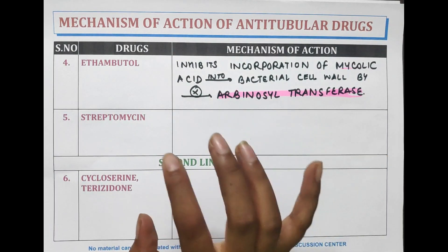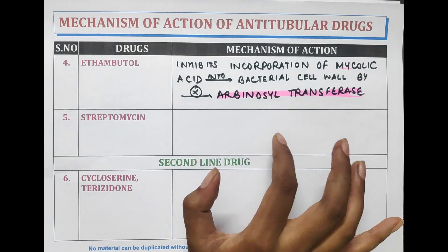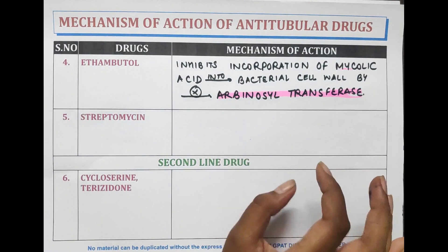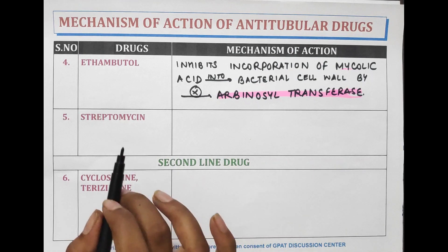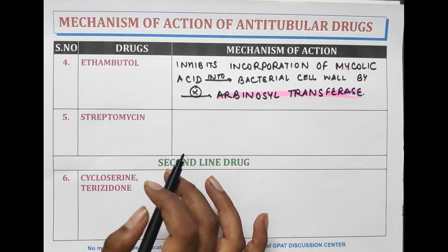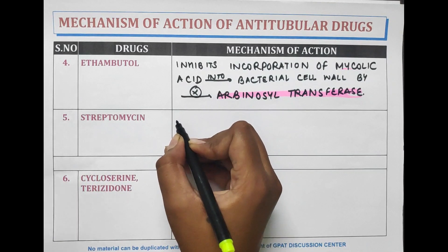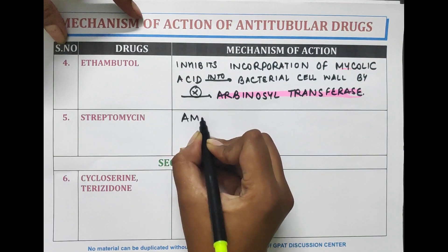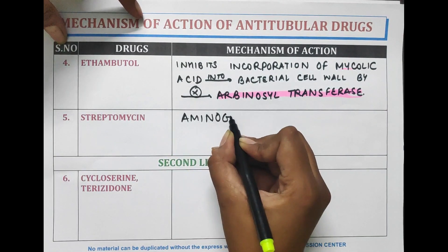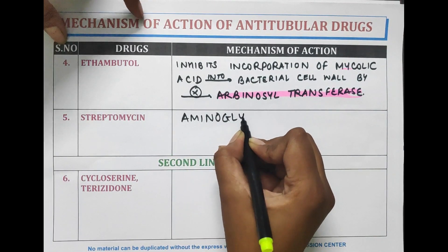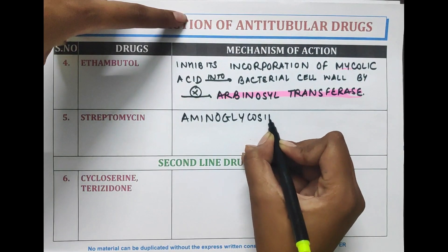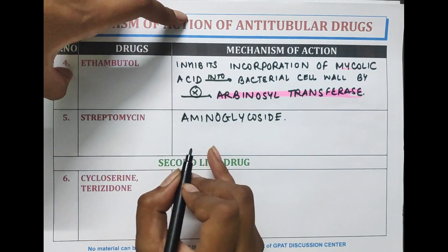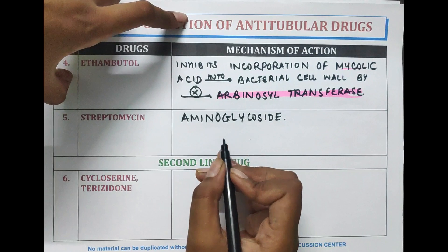The next drug is streptomycin. This is an aminoglycoside, and it acts by inhibiting bacterial protein synthesis.